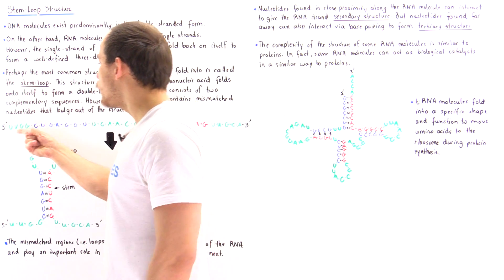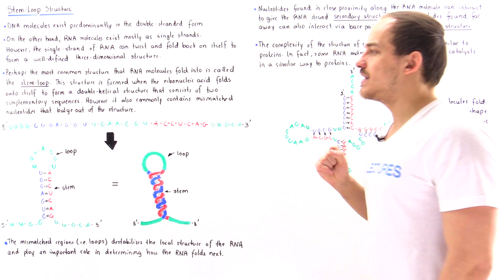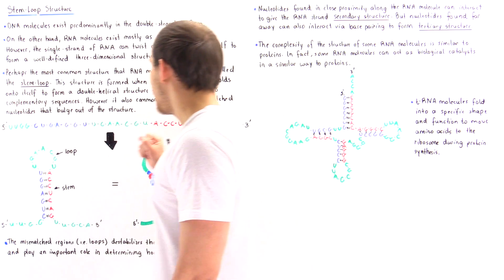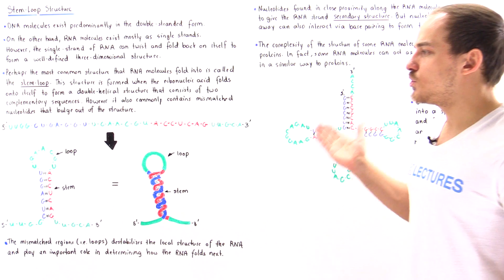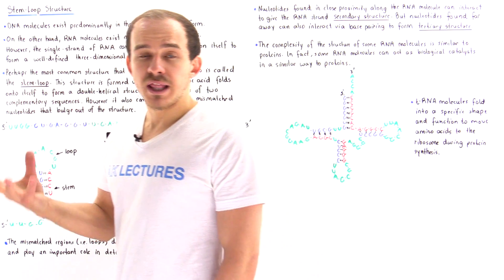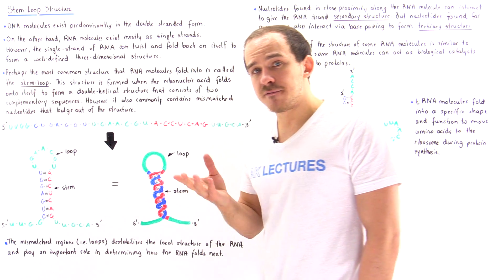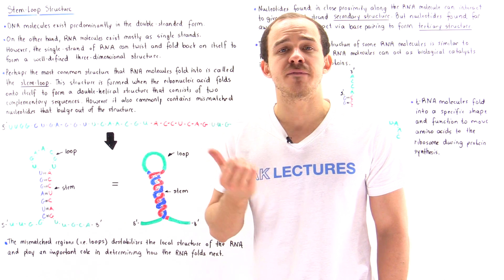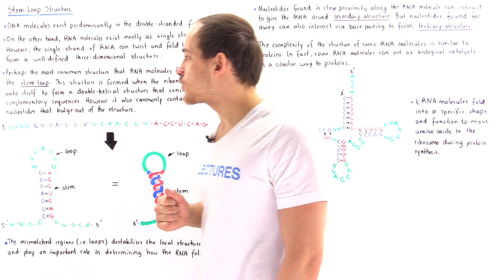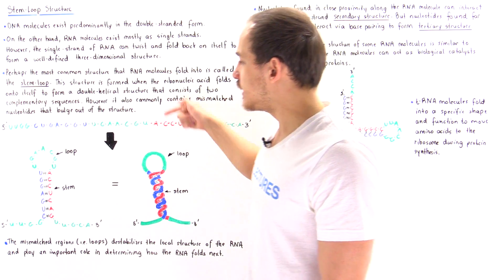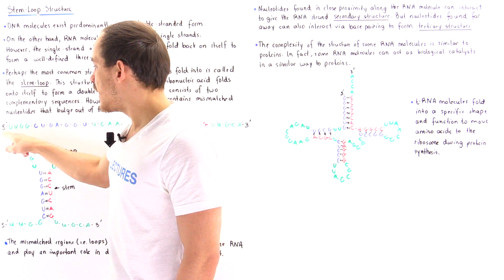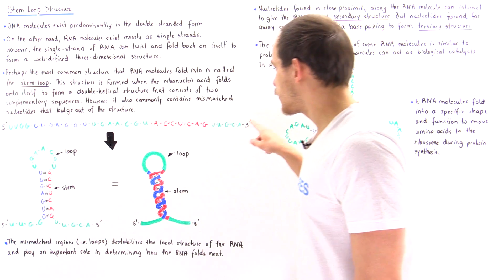Let's suppose we have the following sequence of nucleotides in a given RNA molecule. This is the beginning — the 5' end — and this is the end — the 3' end — of the ribonucleic acid. Now, if we take this RNA molecule and place it into an aqueous environment found in our cell, it can fold into some type of three-dimensional structure. To demonstrate what the stem loop structure actually looks like, let's suppose it folds into the following structure. This is the 5' end here, and this is the 3' end here.